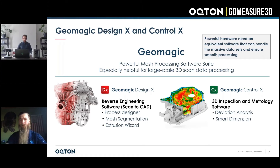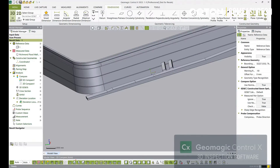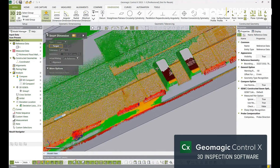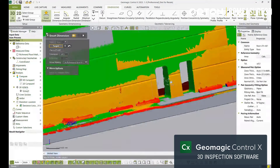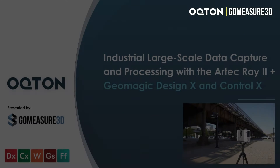Additionally, we'll take a look at Geomagic Control X, which is what we use for inspecting this 3D scan data. We can inspect it directly just using the scan files themselves, or we can also take preexisting CAD data and compare the scan files to that CAD geometry directly.